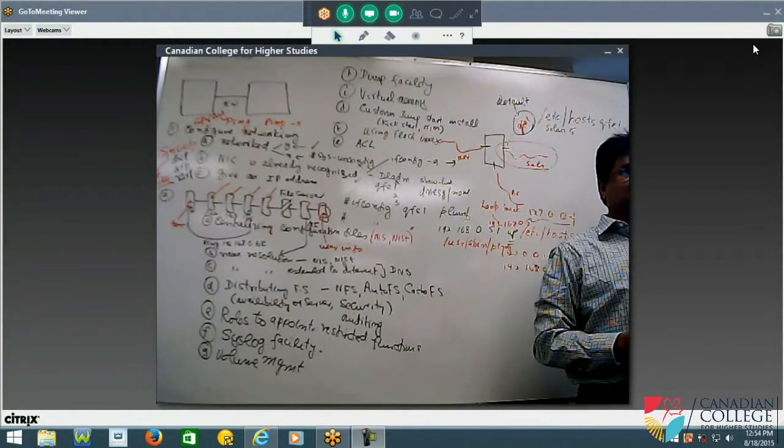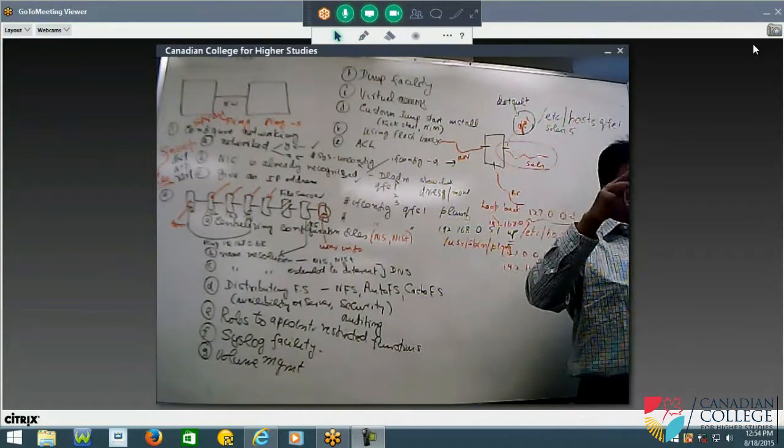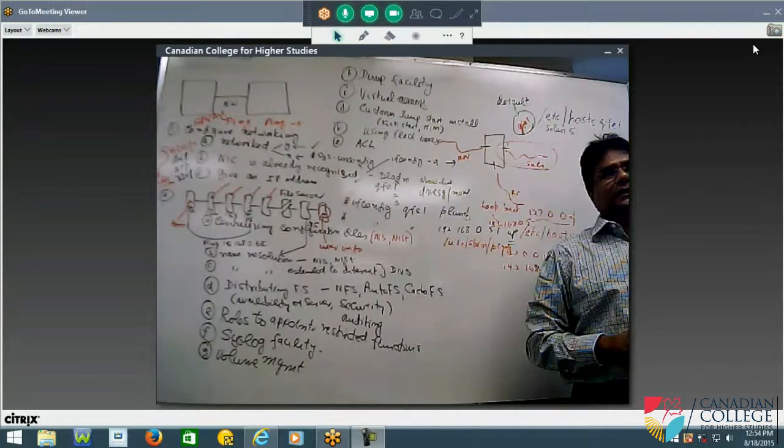You search for the service, SVC minus A, GREF R user and then start that. Then you will be able to see.